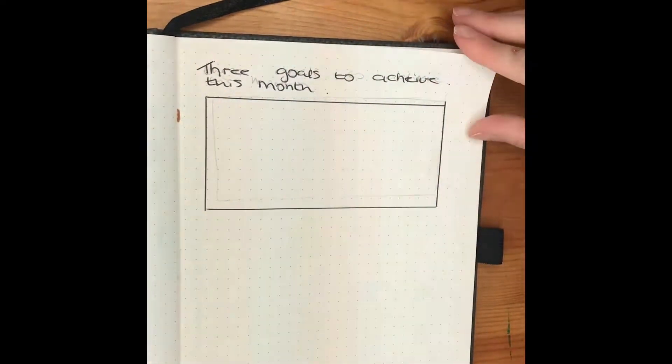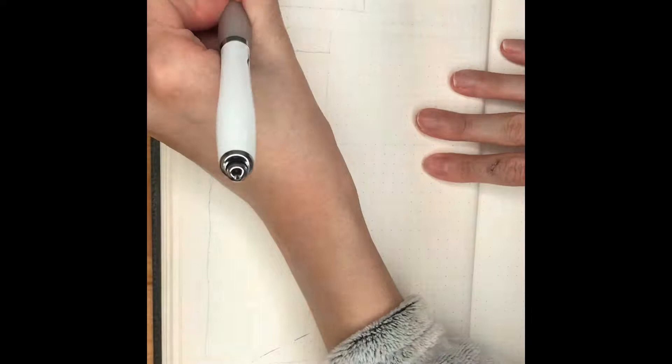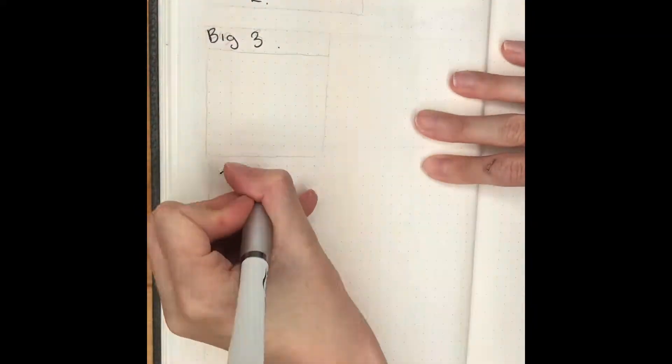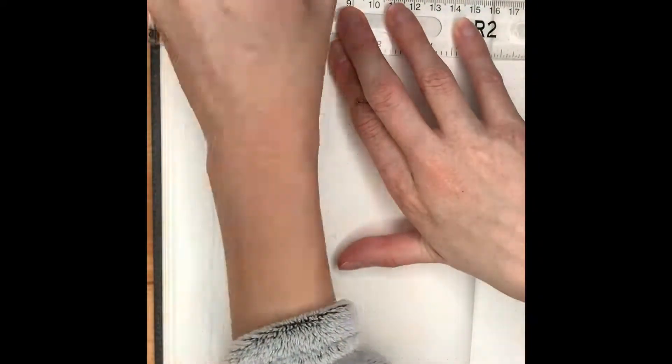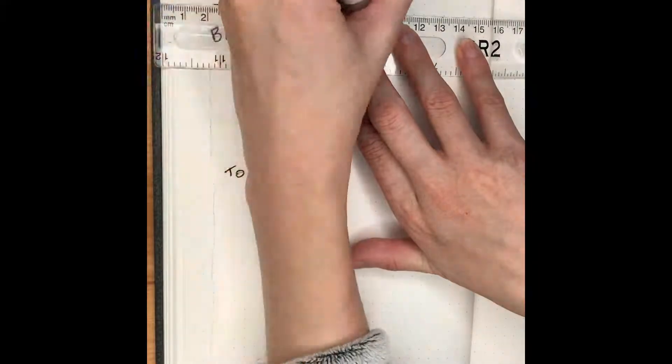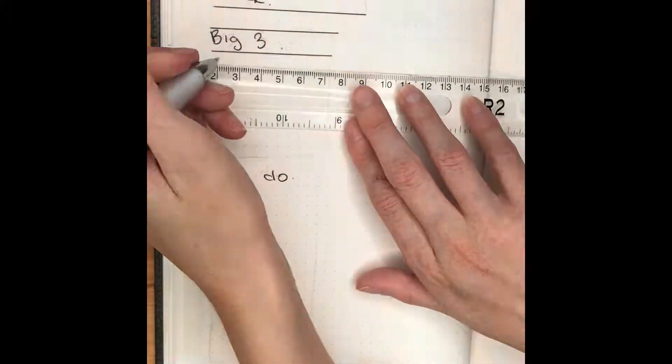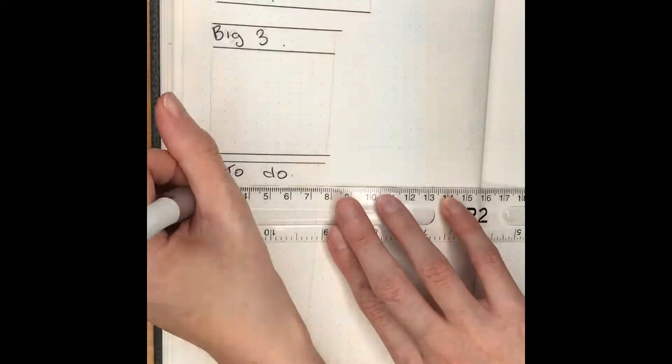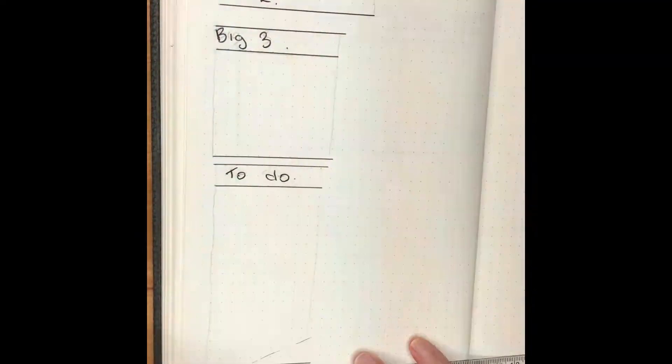Next comes my weekly page. At the top it says week, and then I write down the week dates. Then the big three, that's where I put down my three goals, and then the to-do list at the bottom. I have the big section next to it on the same page to put whatever I like, and then I've also left a page next to it to journal because I really enjoyed doing that. I find that it released a lot of stress.